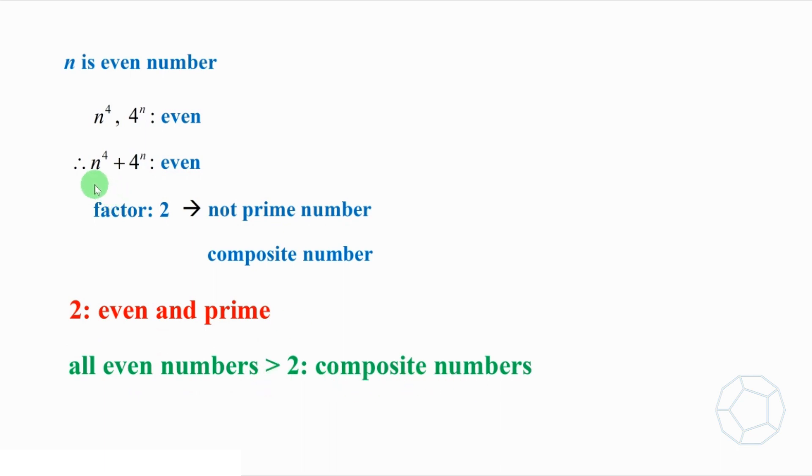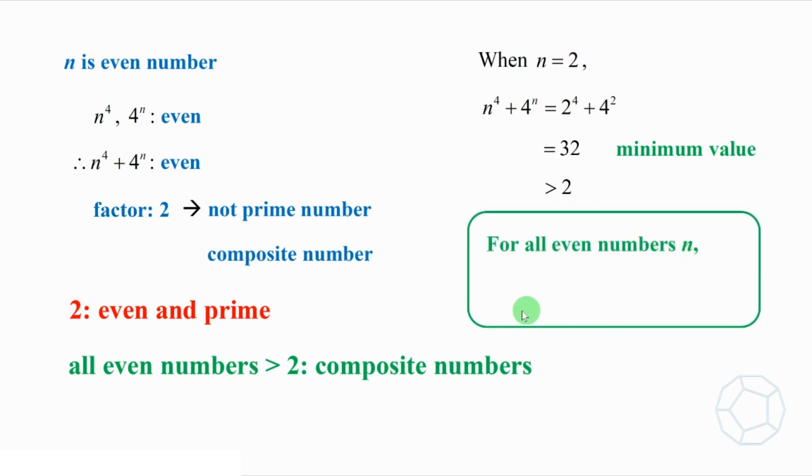Is it the case for n to the power 4 plus 4 to the power n? Of course it is. If we put n equals 2 into the expression, then it equals 32. Because we take the smallest even number for n, therefore this is the minimum value, which is still larger than 2. In other words, for all even numbers n, n to the power 4 plus 4 to the power n is not a prime number.